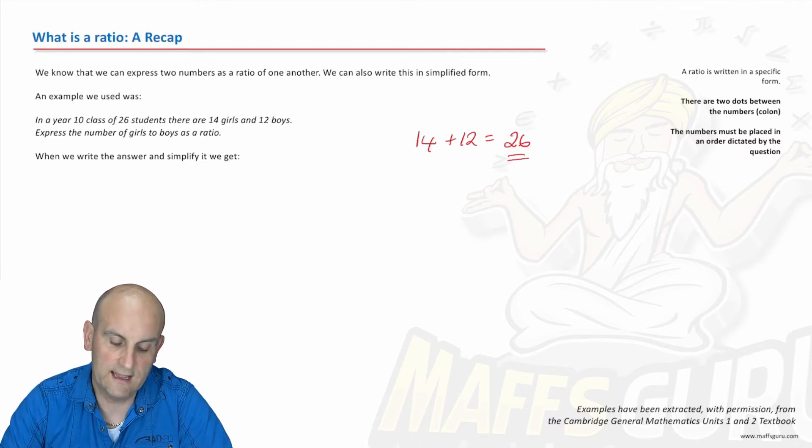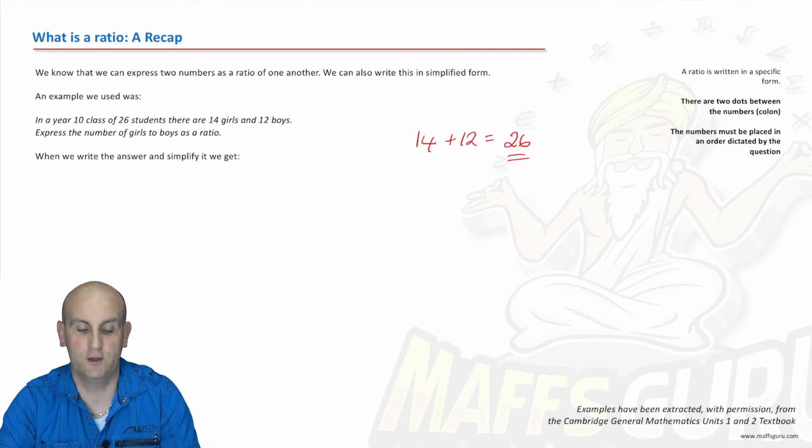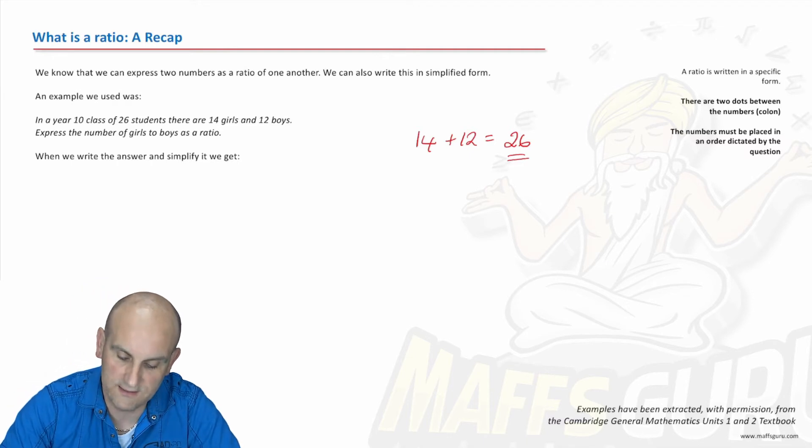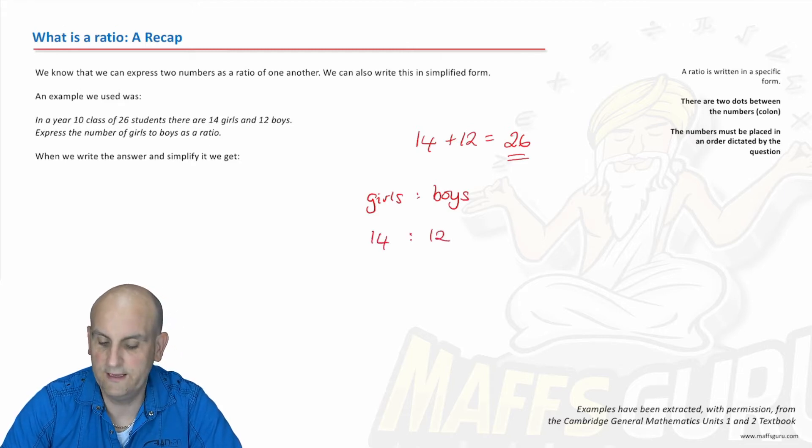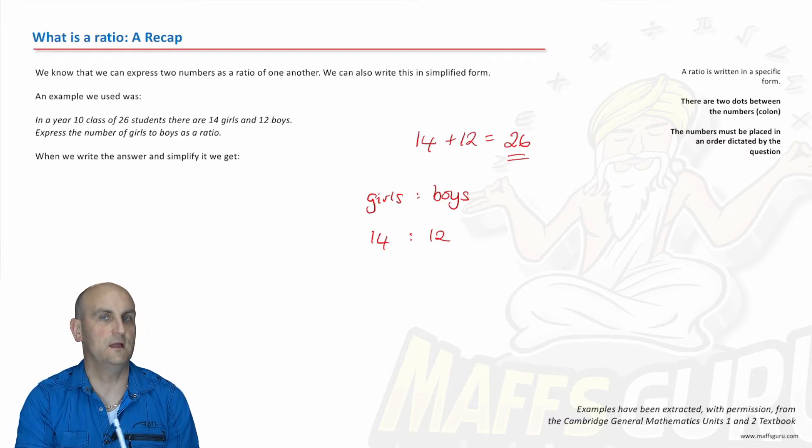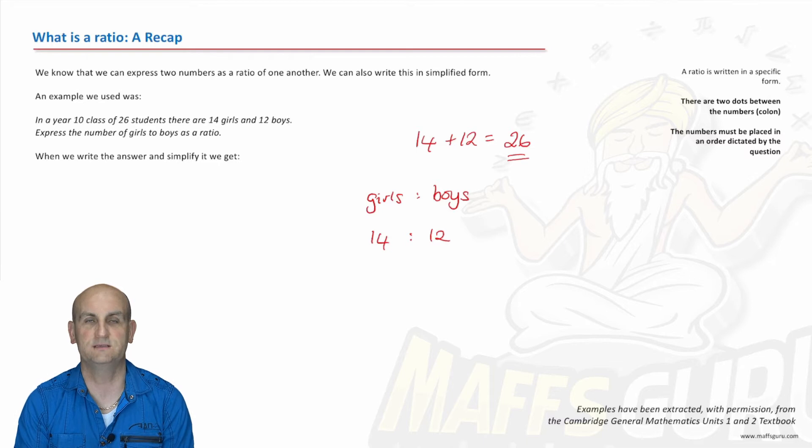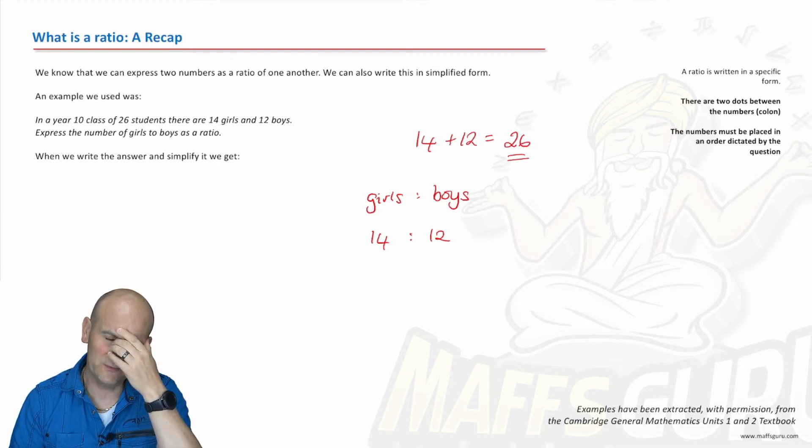And then what we did is we could now express the ratio of girls to boys, and again remember the order of that is important. Girls colon boys. So what do we say? There were 14 girls and there were 12 boys. Now again, a video I've just done says that we can cancel these things down. Because a ratio must always be expressed in its simplest form. What goes into 14, 12? 2.